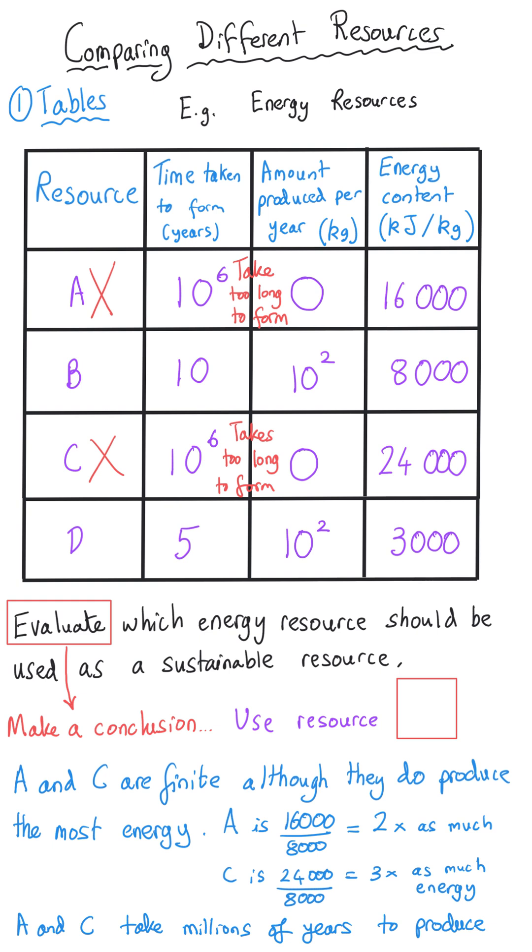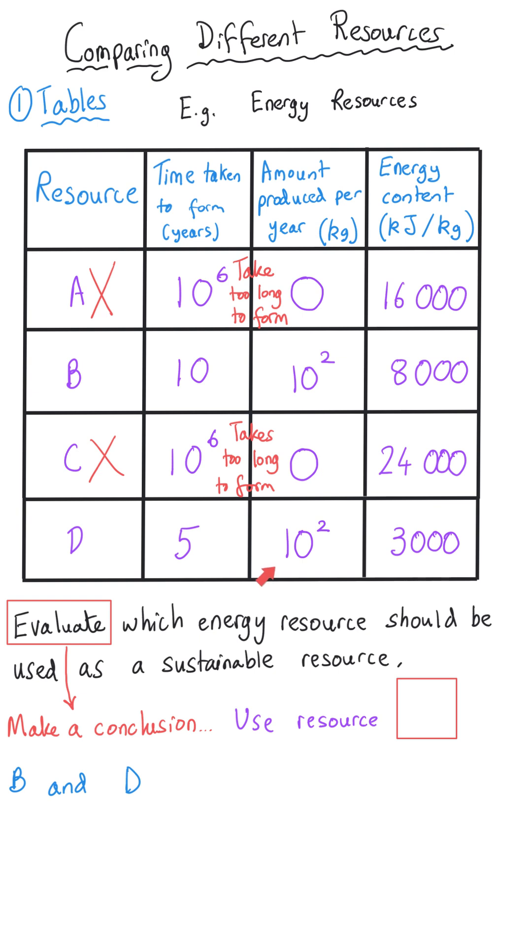And so we're looking at resource B and D as our options. Now we can produce the same amount of them each year so that's not a factor but B takes twice as long to produce as D.